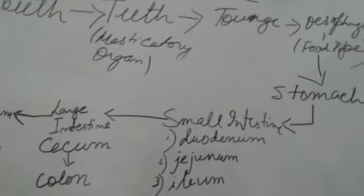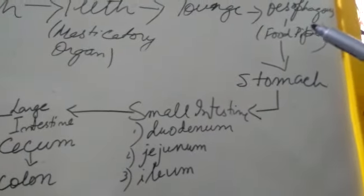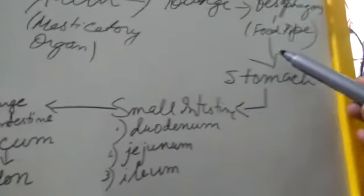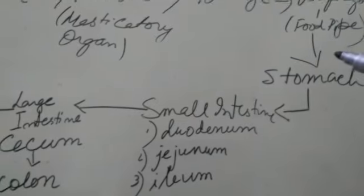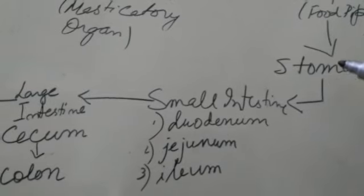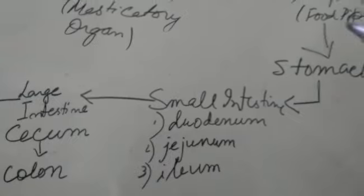The esophagus is the food pipe, as you can see on the board. The bolus passes through the esophagus via peristaltic movement—that is, contraction and relaxation—and then reaches the stomach.